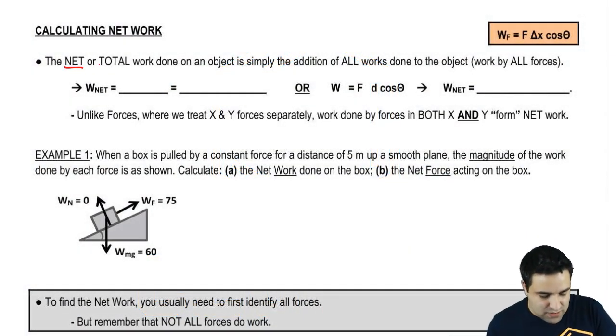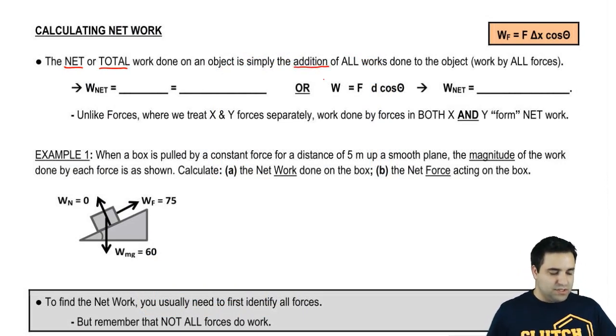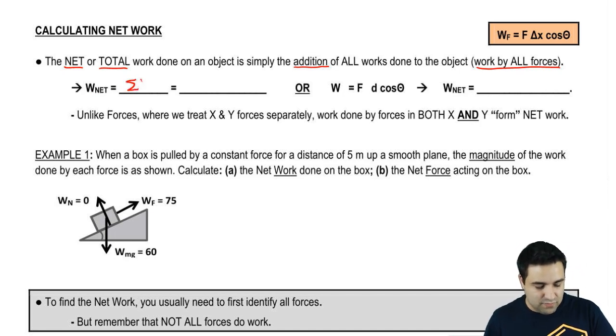So the net or total work done on an object is simply the addition of all works done to the object. In other words, the work done by all forces that act on the object. So work net, or net work, is simply the sum of all works.